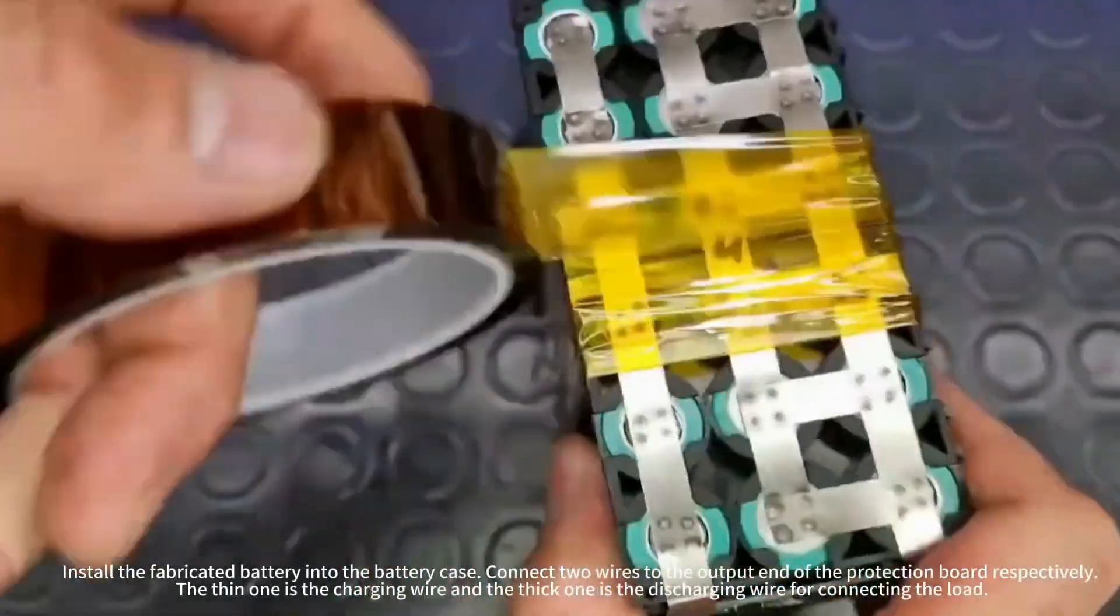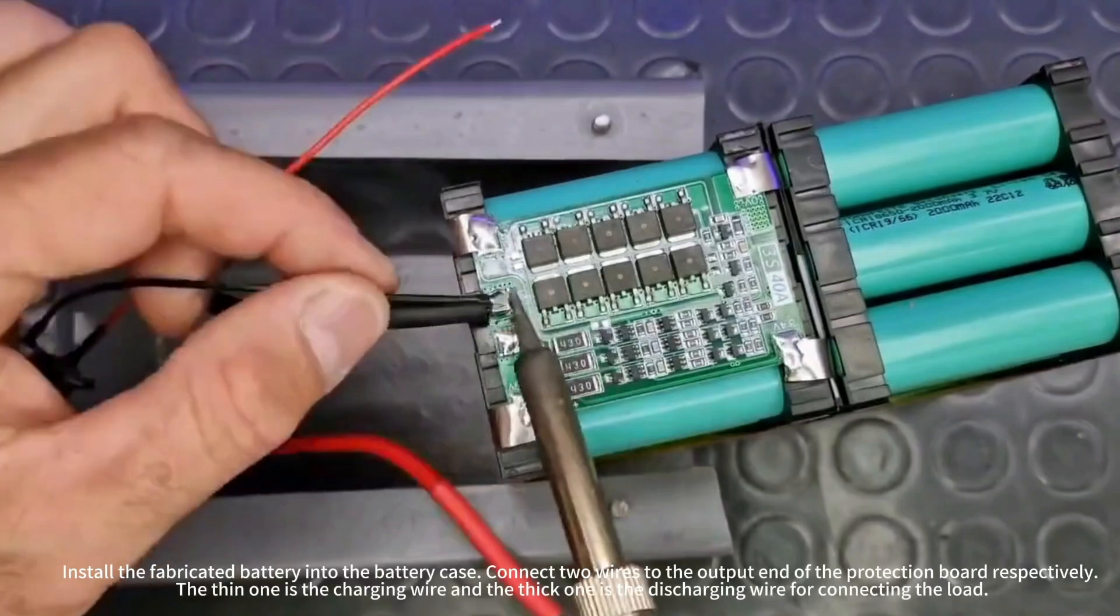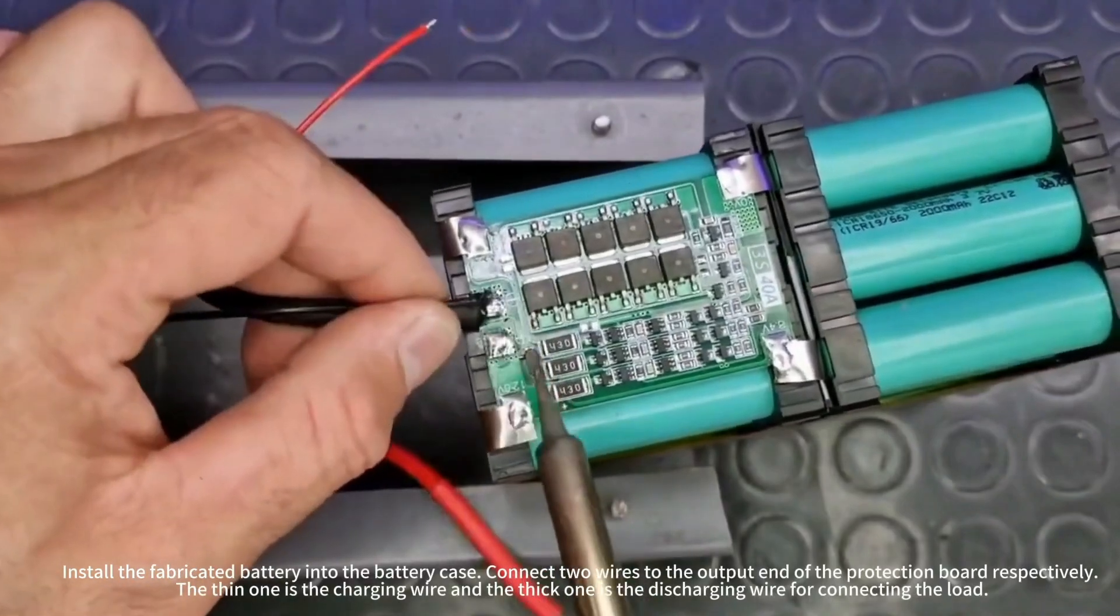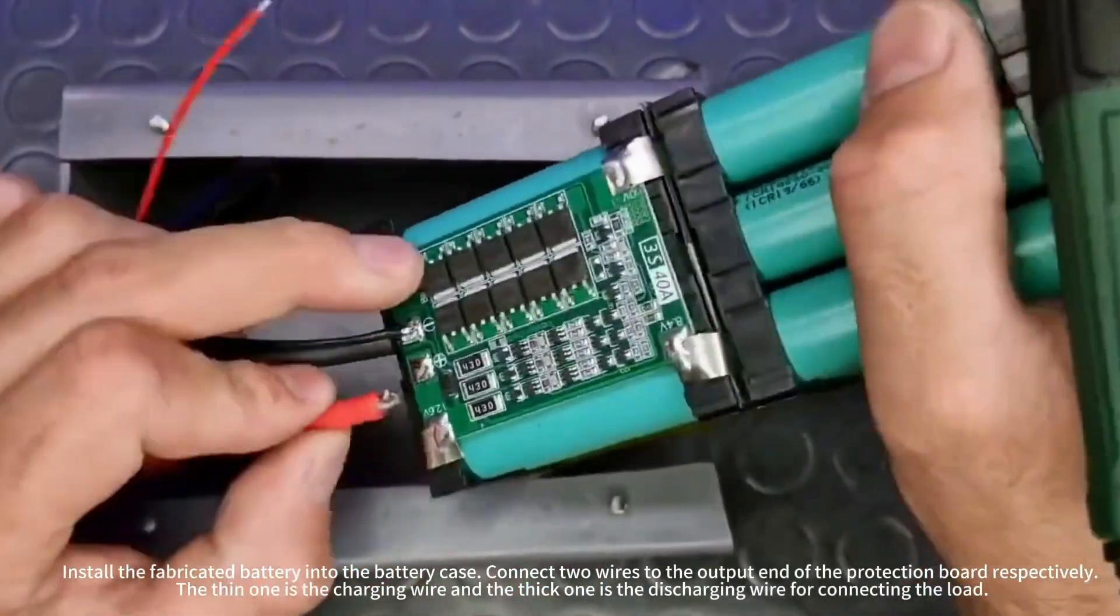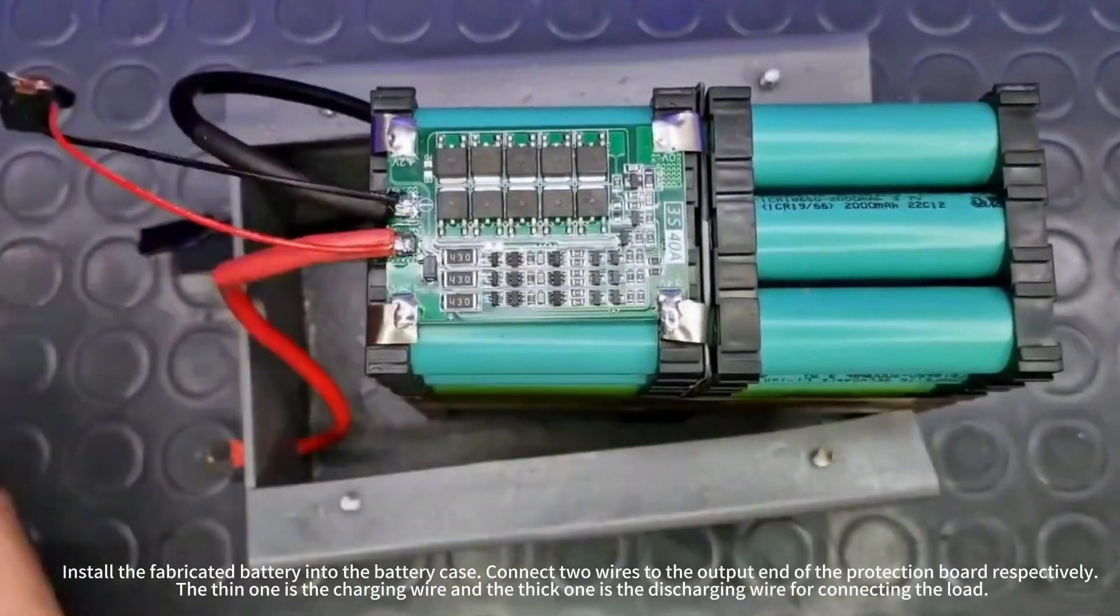Install the fabricated battery into the battery case. Connect two wires to the output and the protection board respectively. The thin one is the charging wire, and the thick one is the discharging wire for connecting the load.